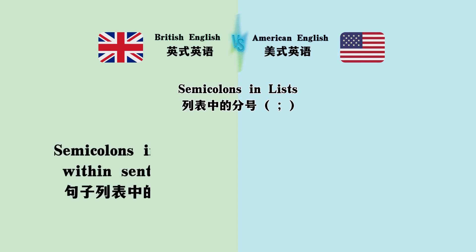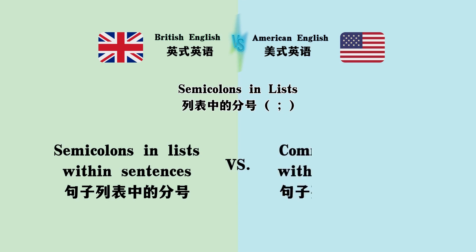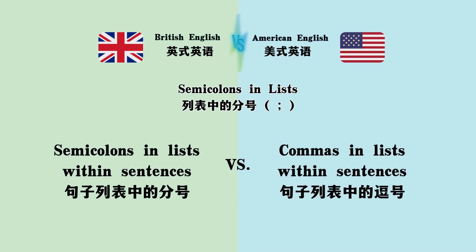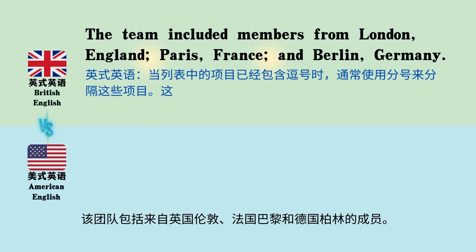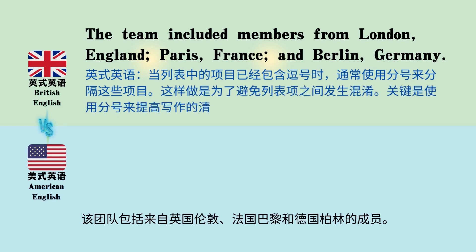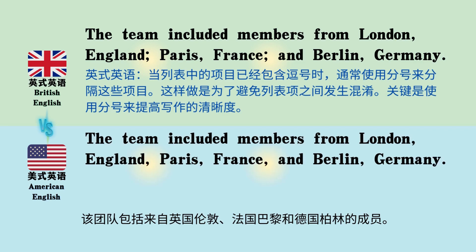Semicolons in lists within sentences. 'The team included members from London, England, Paris, France, and Berlin, Germany' — demonstrated with and without semicolons separating the location pairs.